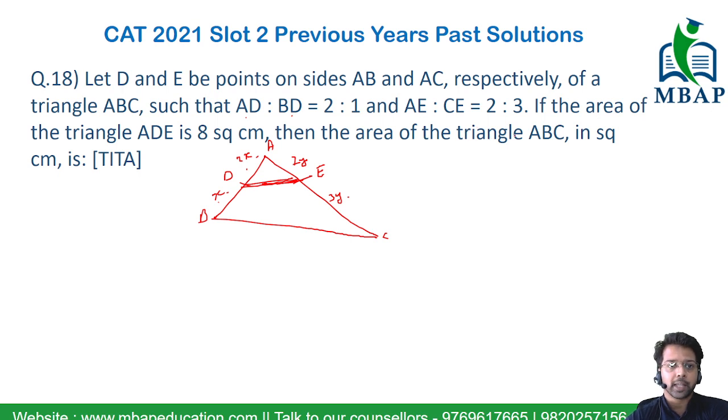The area of the triangle ADE, ADE is already been given to me. ADE is nothing but 8 square centimeter and the whole triangle area ABC is something which we have to find at the given question.